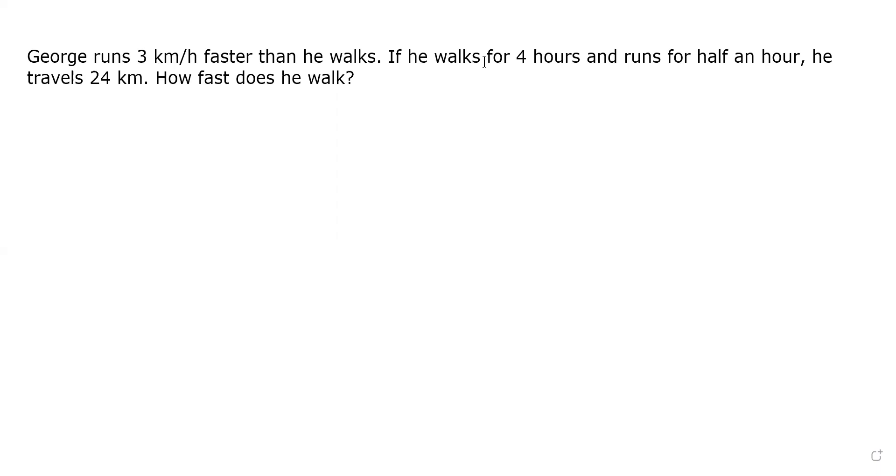We know that his running speed is three kilometers per hour faster than he walks. So if I let w be the speed at which George walks, then the speed at which he runs, let's say r, is just equal to w, the speed that he walks, plus three, and all of this is in kilometers per hour.